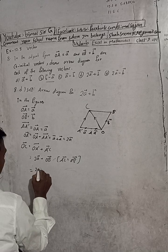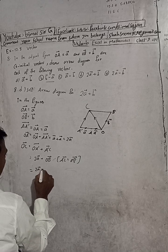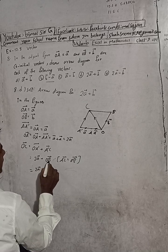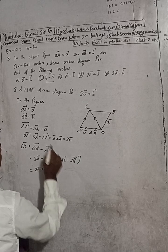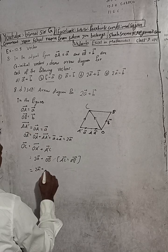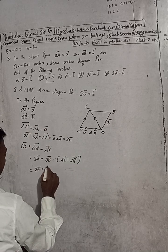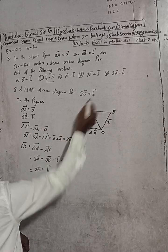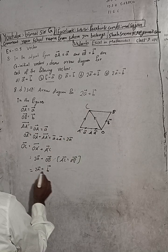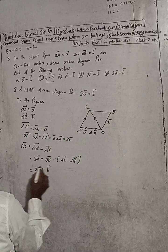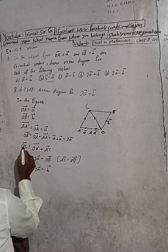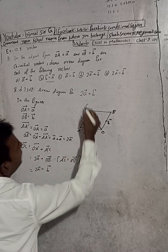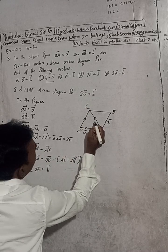So 2A vector plus B vector is equal to OC vector. That is the result: 2A vector plus B vector equals OC vector.